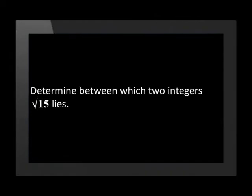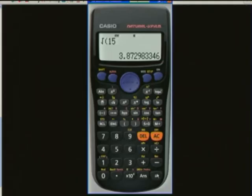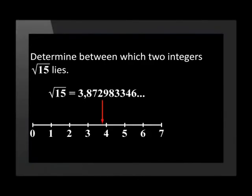Let us find between which two integers the square root of 15 lies. First, let us see what answer we would get if we put this into the calculator. Push the square root button, then 1 and 5 for 15, and press equals. We get an answer of 3.872983346 and it continues on. If we put this onto a number line, we can see clearly that the square root of 15 lies between the integers 3 and 4. That's how we find the two integers using the calculator and the number line.